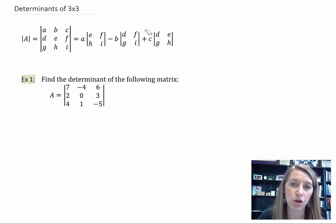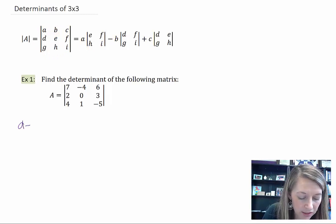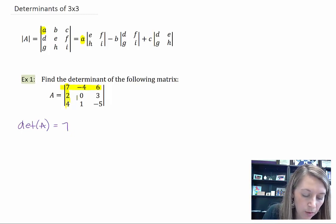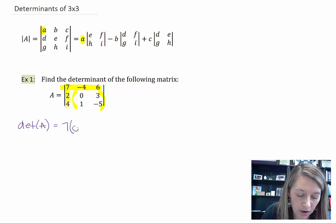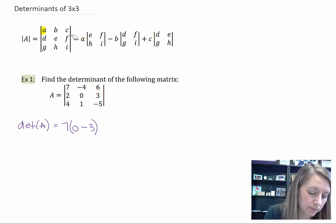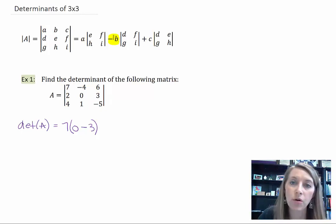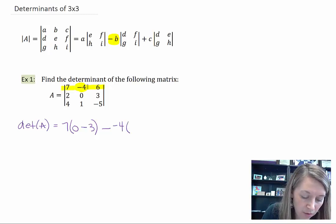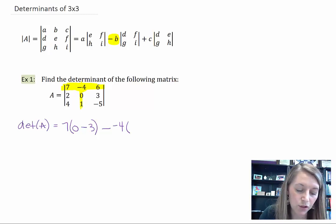So let's find the determinant of this 3 by 3 example. The determinant of A equals — starting with my a value, which is on the top left, that gives us 7. We remove that row and that column and find the determinant of the 2 by 2 matrix left over: 0 times negative 5 is 0, minus 1 times 3 is 3. Then moving on with the formula, I move on to my b value. Notice that this one is subtracted — so minus my b value, which in this matrix is negative 4. Be very careful of those negatives. We remove that row and that column and find the determinant of the 2 by 2 matrix left.